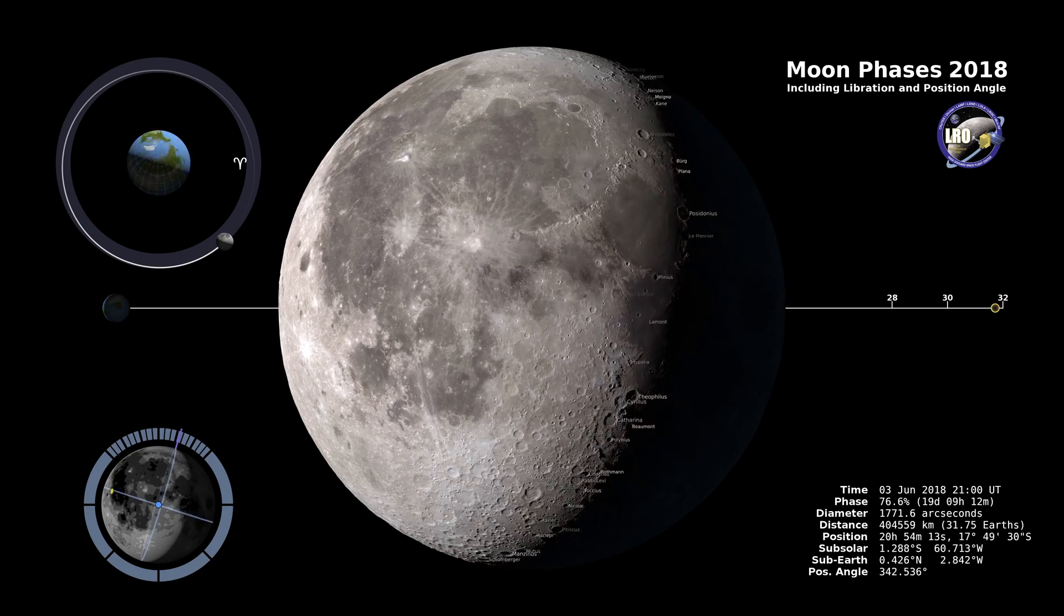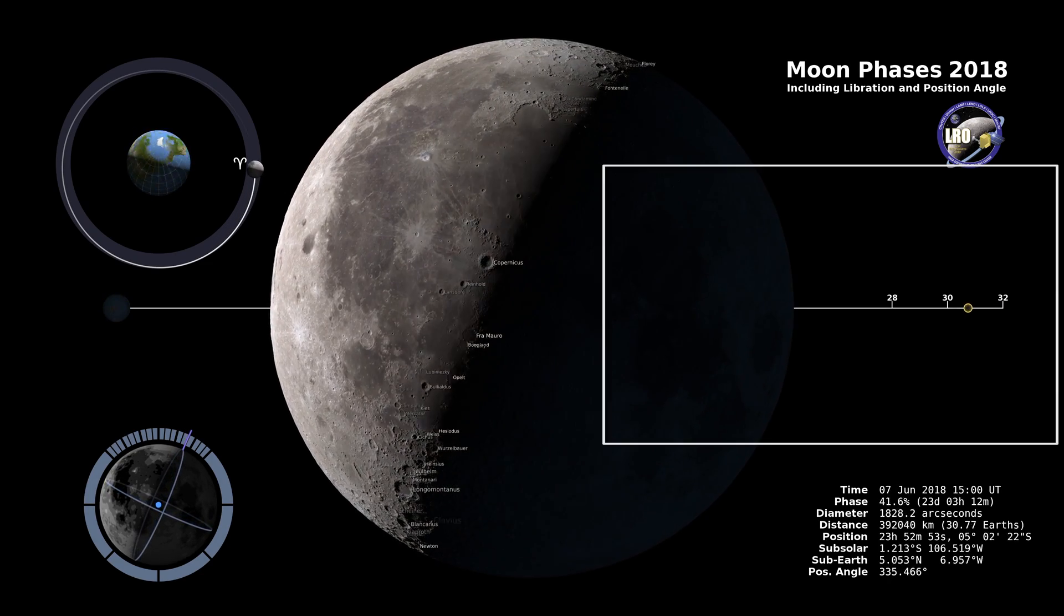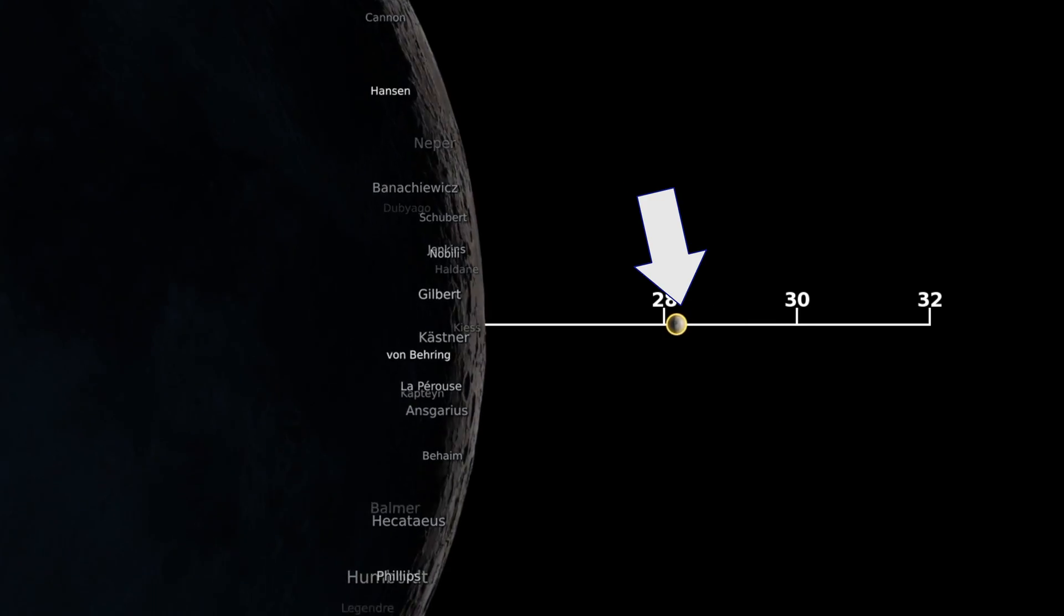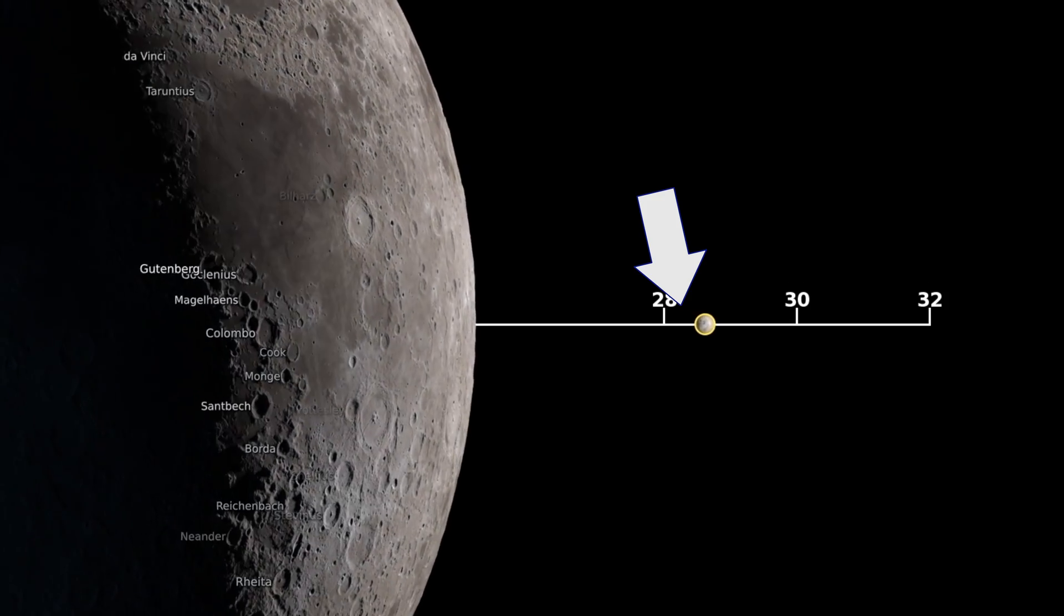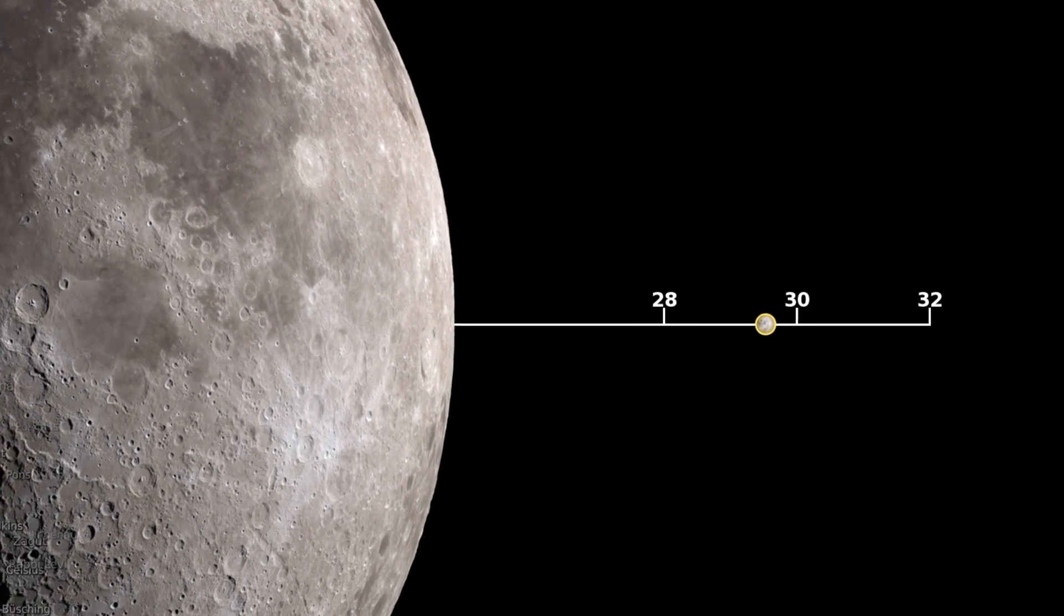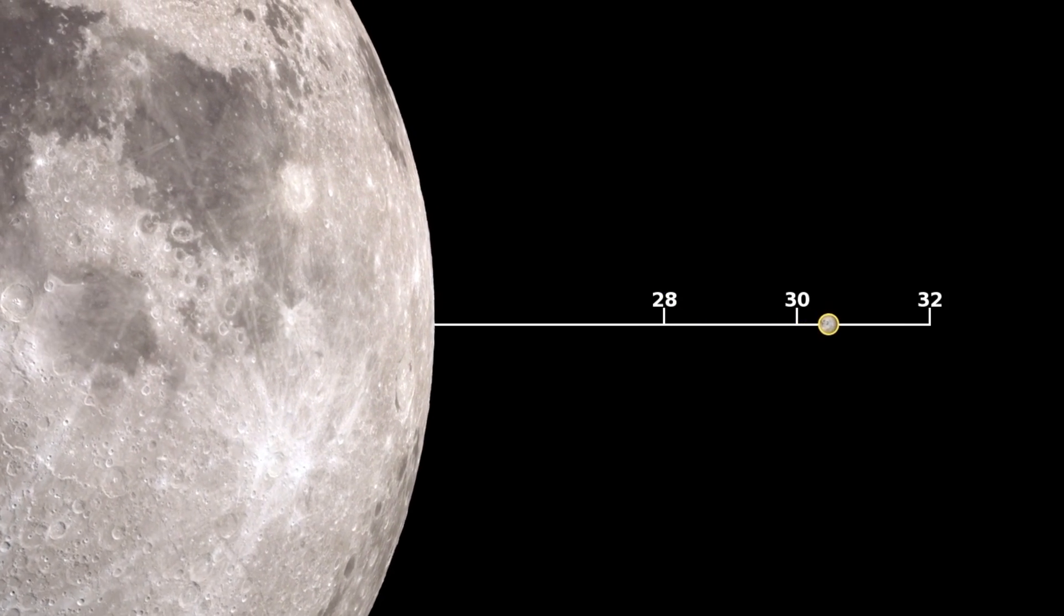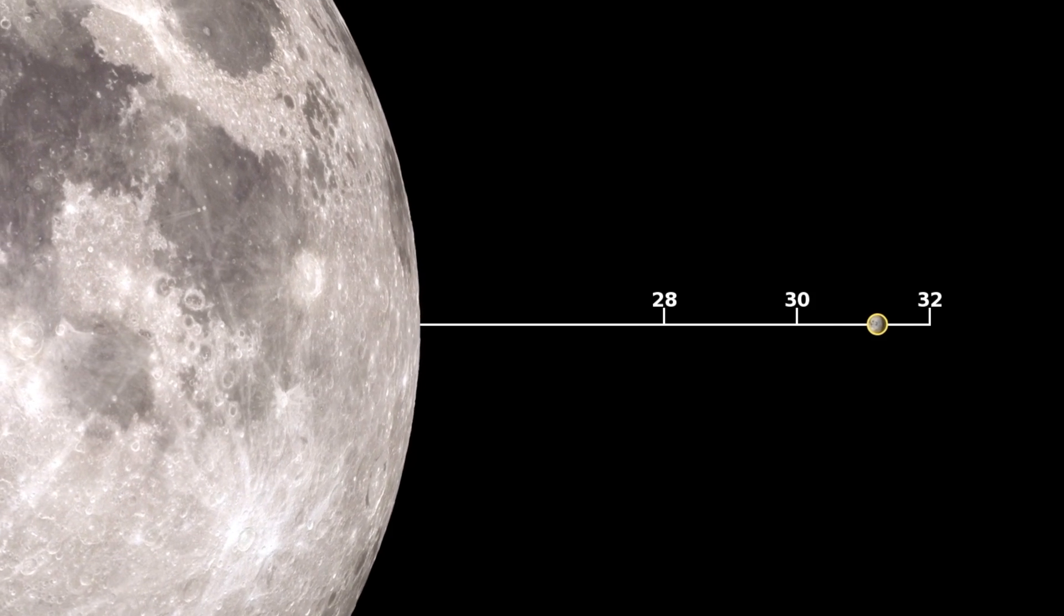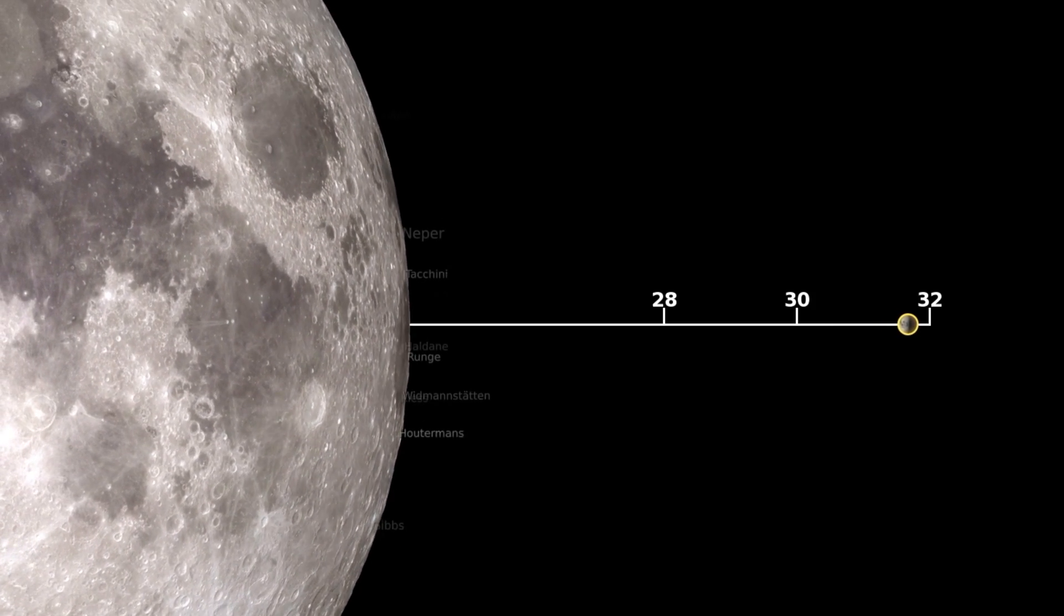If we go over here to this middle bar in the center, this is going to show us an animation of the earth of course on the left. And then on the right we're going to see this yellow circle is the moon itself and the numbers 28, 30 and 32, those are just telling us how many earth diameters the moon is away from the earth.